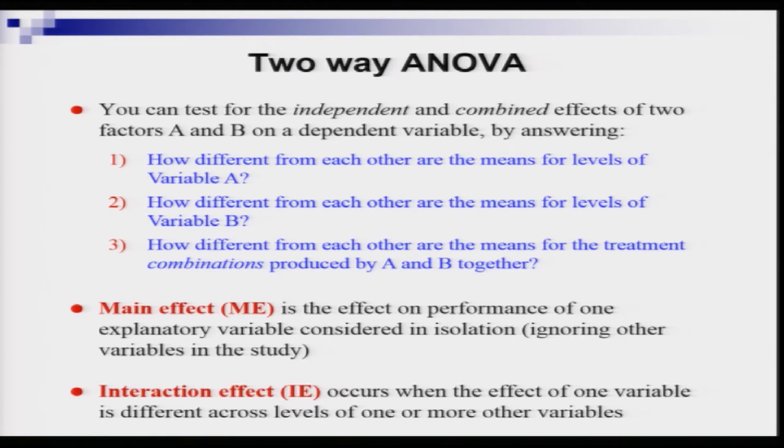The same question can be asked for factor B — that is question two. Question three is the most important: when dealing with two or more explanatory variables, you cannot assume they will not affect Y simultaneously. There could be an interaction between A and B, leading to an interaction effect.